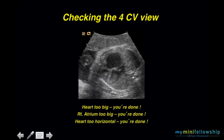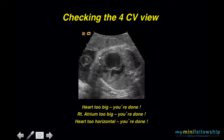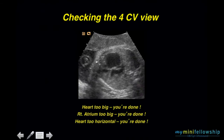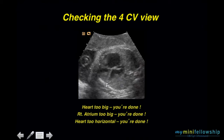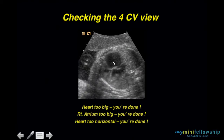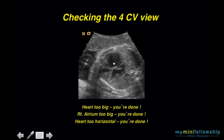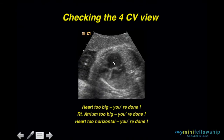If you noted that the heart was too horizontal — you drew your mid-sagittal line and the line through the interventricular septum and noticed that it was too horizontal — you're done.